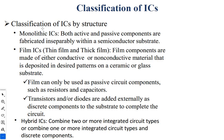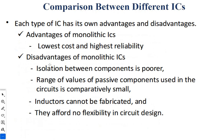Classification of ICs: ICs are classified by their structure as monolithic ICs, film ICs — which constitute thick and thin film ICs — and hybrid ICs. Monolithic ICs: both active and passive components are fabricated inseparably within the semiconductor substrate. Film ICs: they are used as passive circuit components such as resistors and capacitors; transistors, diodes, etc. are added as external discrete components to the substrate to complete the circuit fabrication. Hybrid ICs: the combining of two or more IC types, or combining one or more IC types and discrete components.